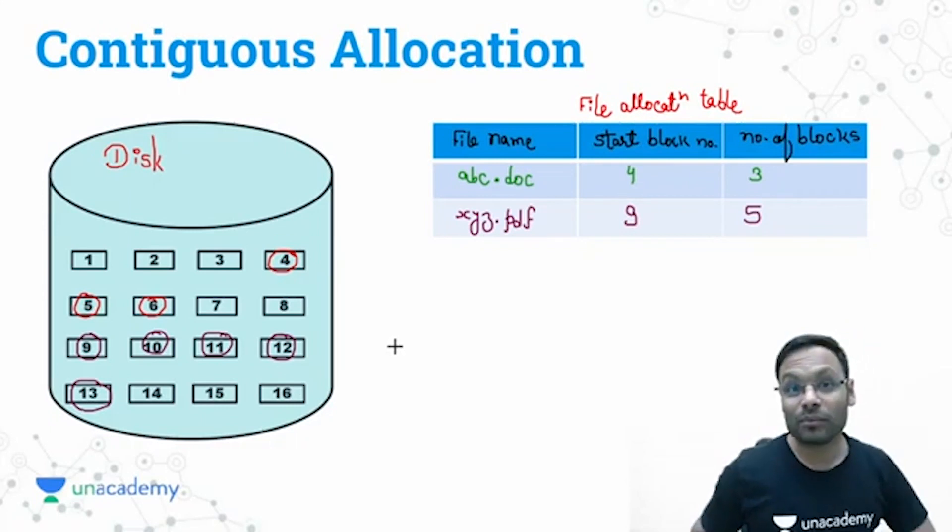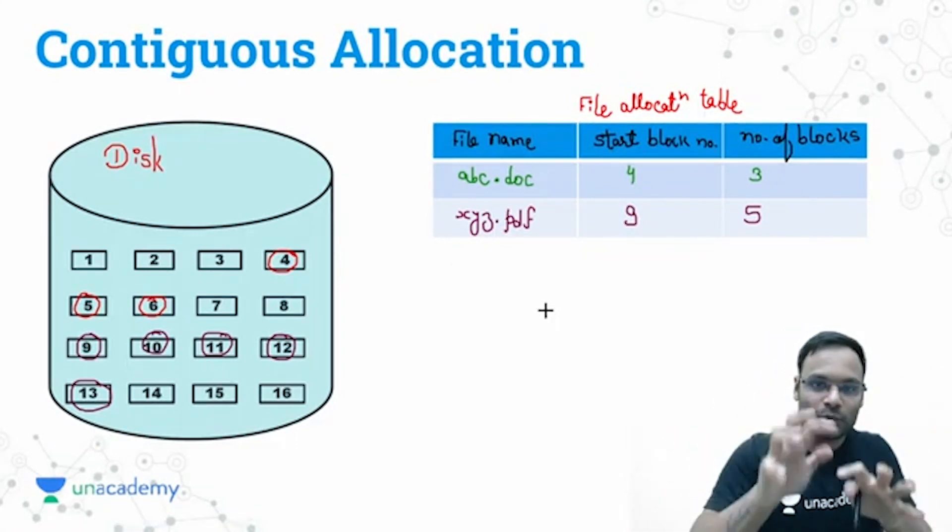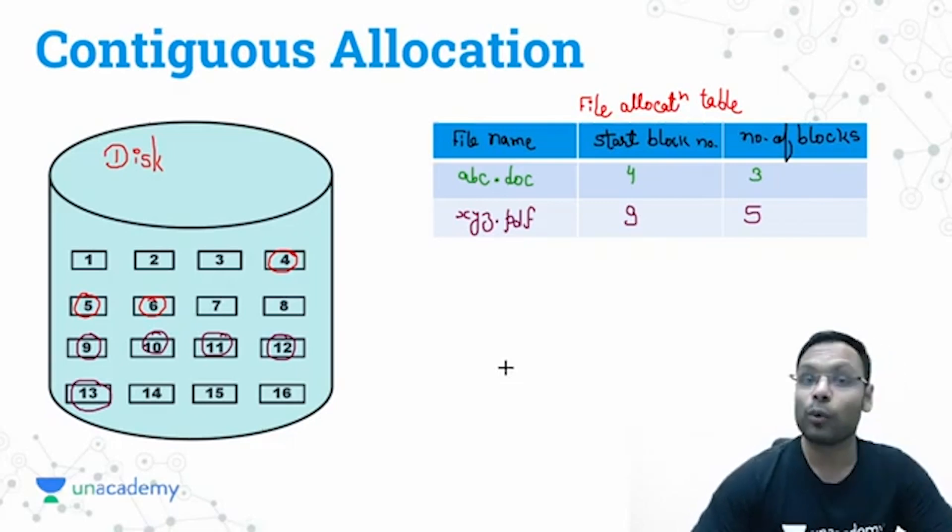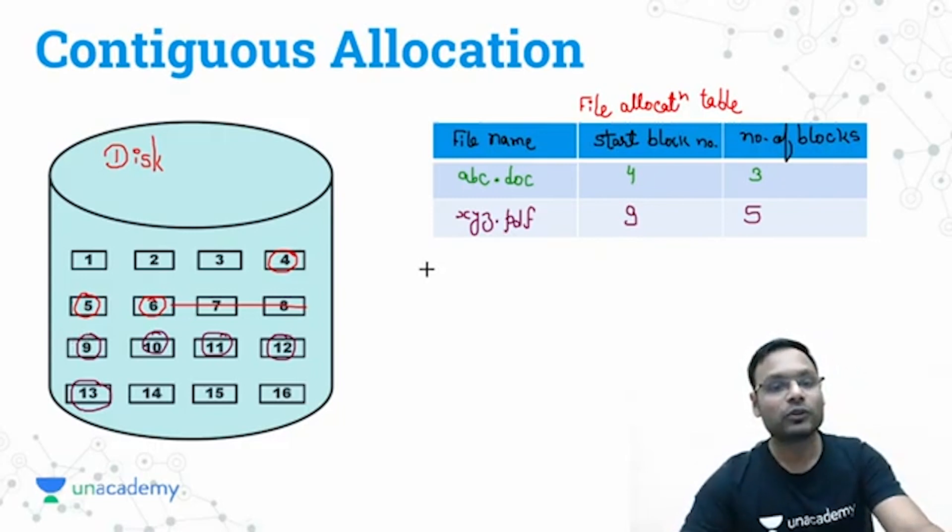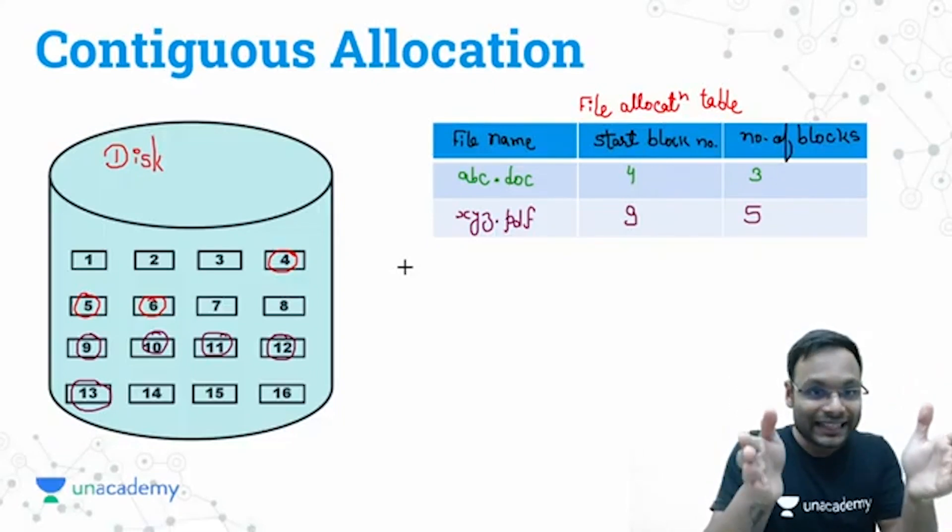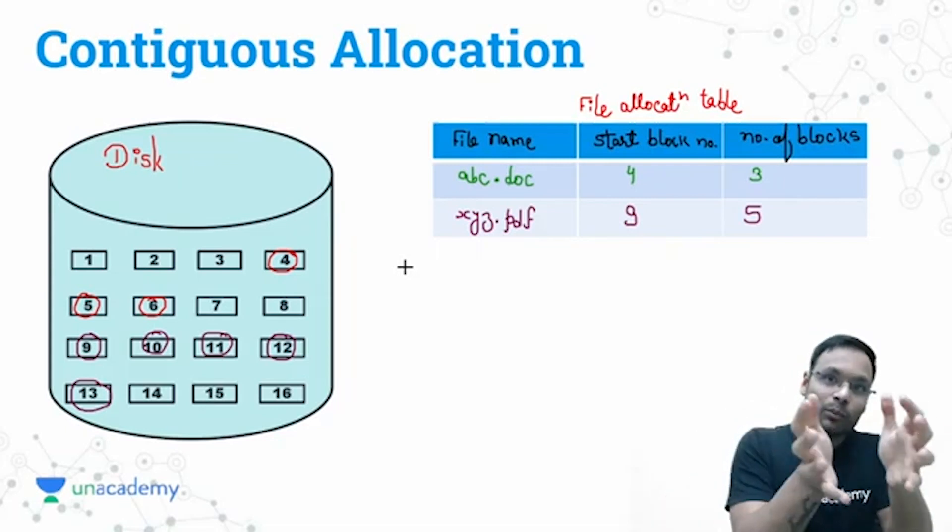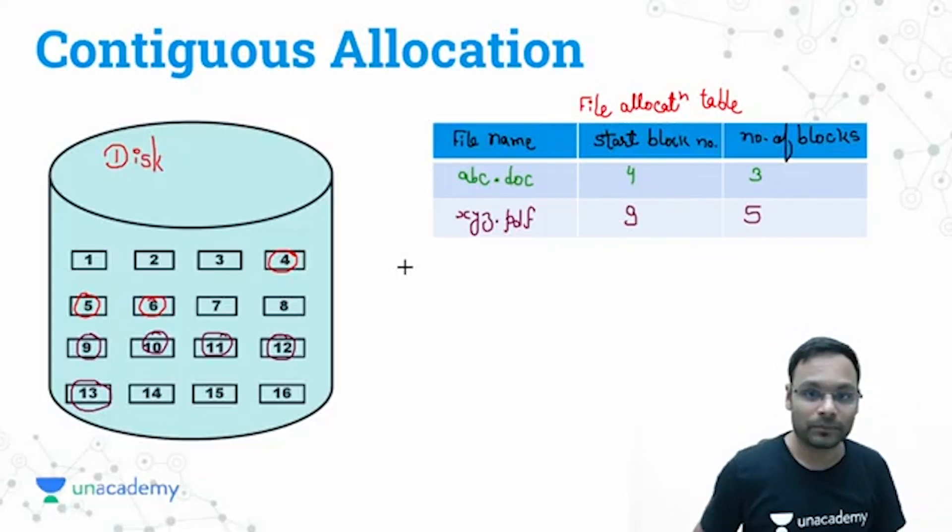But there is a problem. Let's say this document file you have opened, and after that you are changing the file size just because you are typing something more. You are typing, typing, typing—you have increased the size. Now this file needs three more blocks to be stored. Three more blocks—do we have three more blocks consecutively after six? Four, five, six—three more blocks you need. Do we have three more blocks? No, we don't have three more blocks. So the problem in contiguous allocation is if file size increases, then this contiguous allocation will not be good, will not be so flexible that three more blocks can be available continuously. That can be a problem.